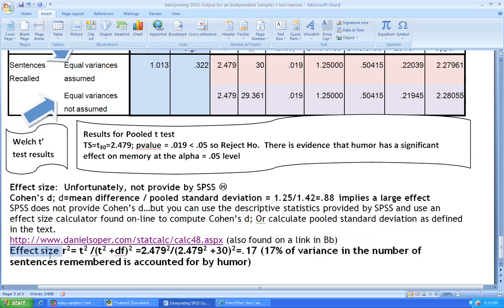Computing the effect size R squared, which is our test statistic squared divided by T squared plus DF, we get a value of 0.17, indicating that 17% of the variance in the number of sentences remembered is accounted for by humor. The effect size Cohen's D implies a fairly large effect and we have 17% of the variance being explained.